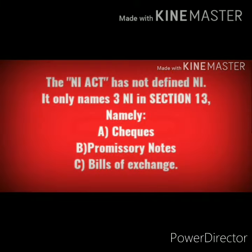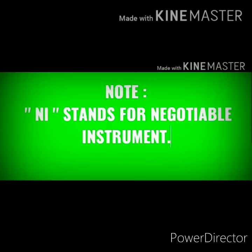Negotiable Instrument Act को किसी भी section ने define नहीं किया है. इस Act में सिर्फ यह mention किया गया है कि इसके कितने types हैं. There are three types of Negotiable Instruments: number one — Cheques, number two — Promissory Note, and number three — Bills of Exchange.